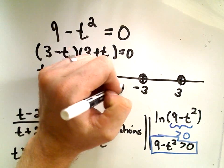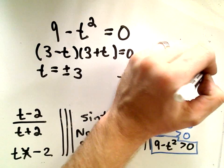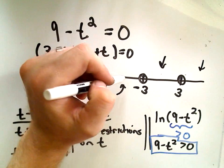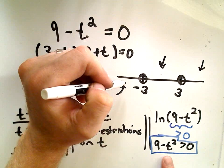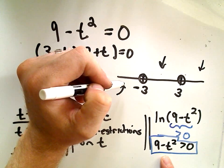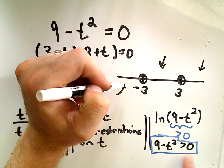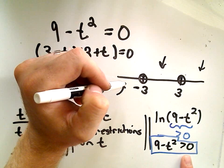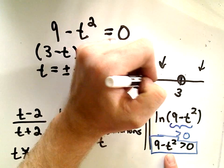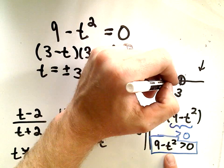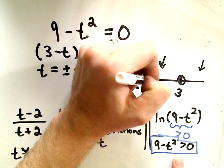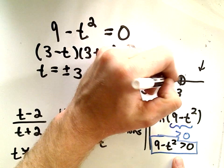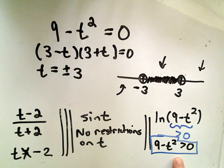For inequalities, basically what you have to do is you have to test a point from each interval. You can check if you take a number less than negative 3 and plug it in your inequality, you will not get a number greater than 0, so that stuff doesn't work. Notice if we take a number between negative 3 and positive 3,